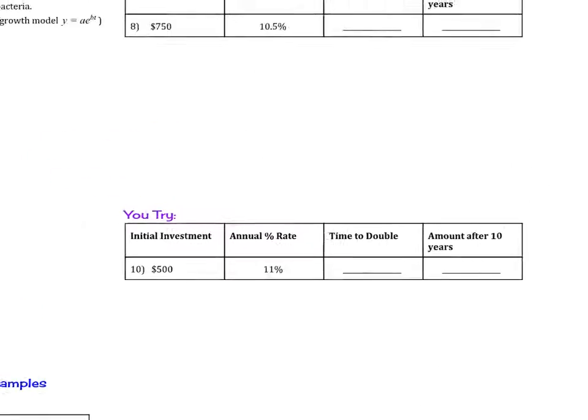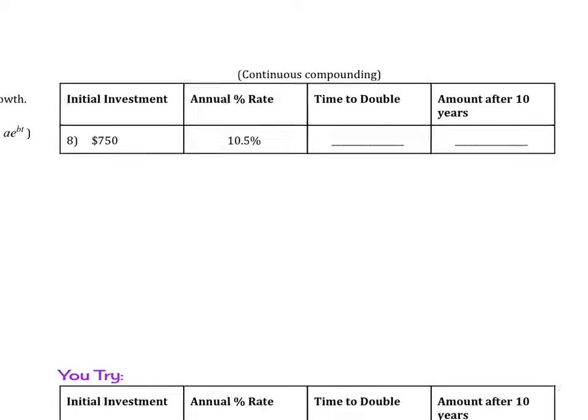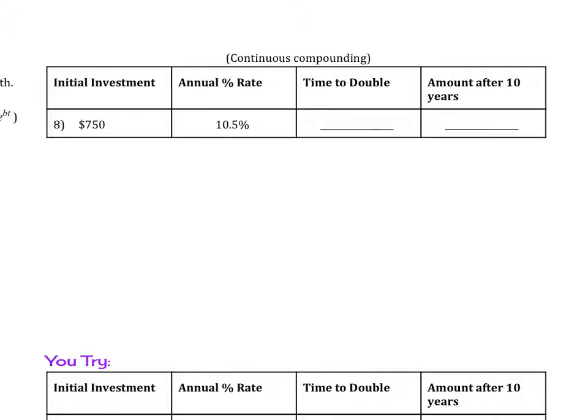So our first example has to do with continuous compounding. This is the information they gave you in the book. This is number 9, and it gives us the initial investment is $750, our annual rate is 10.5%, and then we assume that there is continuous compounding. So in order to do these problems we need the A equals Pe raised to the rt formula, and so we know that this is our principal. The annual rate we have.